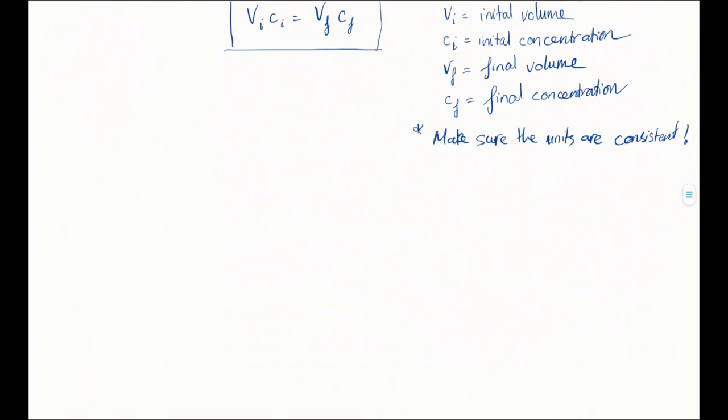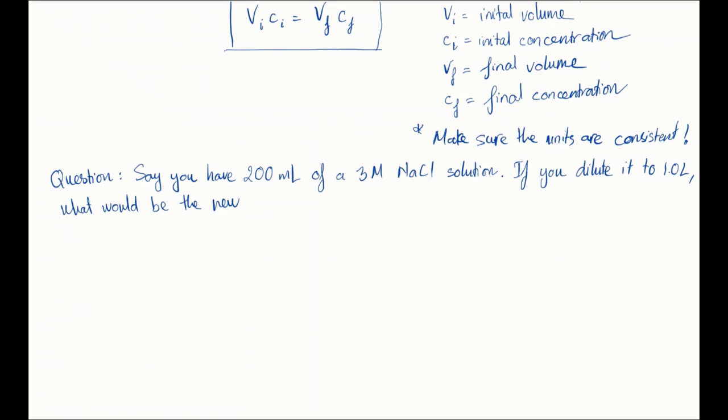So let's do a question so we could have a better understanding of what that means. So you have 200 milliliters of a 3.0 molar sodium chloride solution. If you dilute it to one liter, what would be the new concentration of this sodium chloride solution? So let's summarize the question.